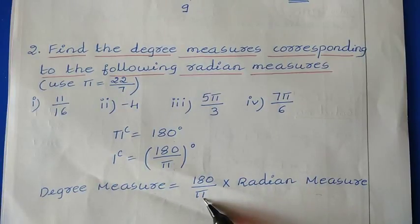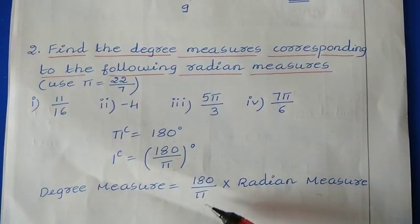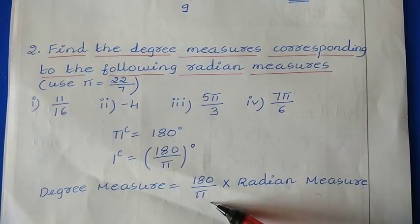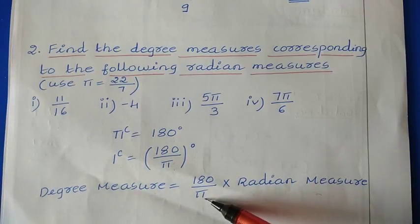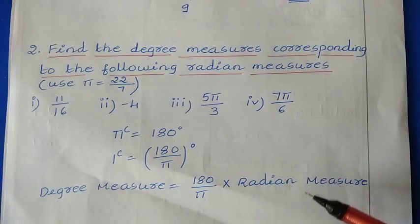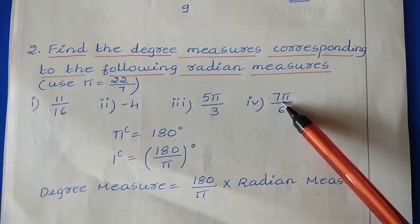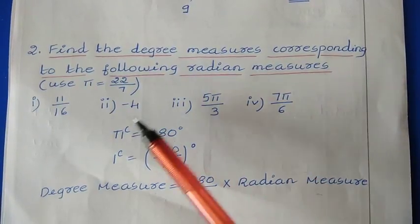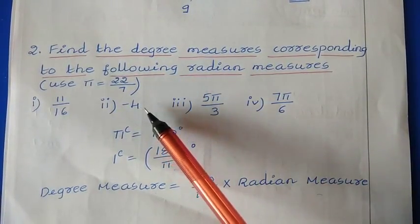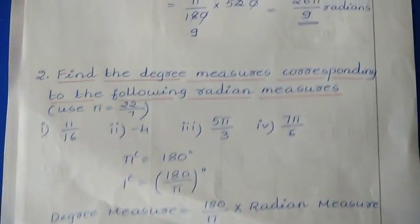The π value you need to replace with 22/7. This is a very important thing. Whenever you are finding the degree measure from a radian measure, you have to replace π with 22/7. In some cases, the radian measure itself may have π — in those problems π gets cancelled. If the radian measure does not have π, then you need to replace π with 22/7. So let us solve the problems.